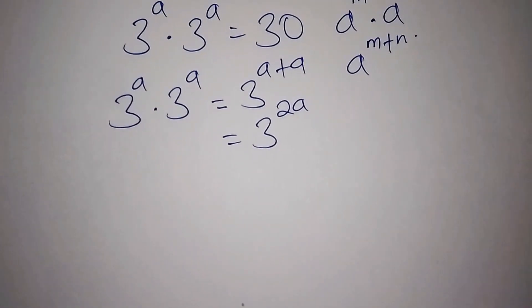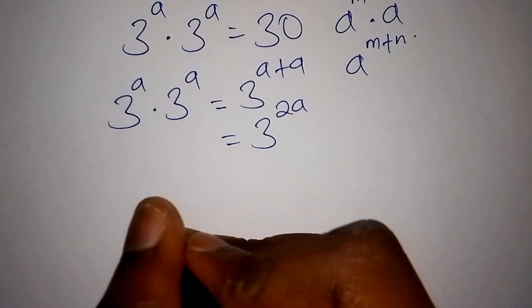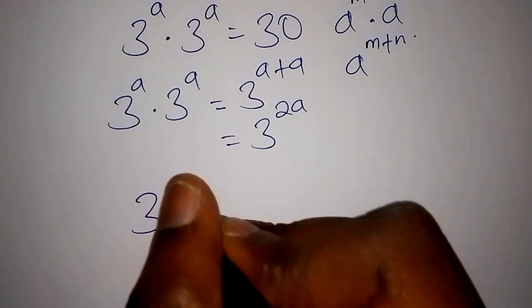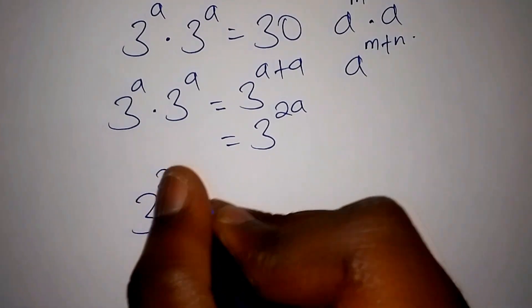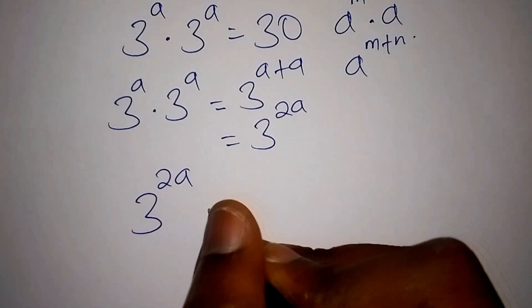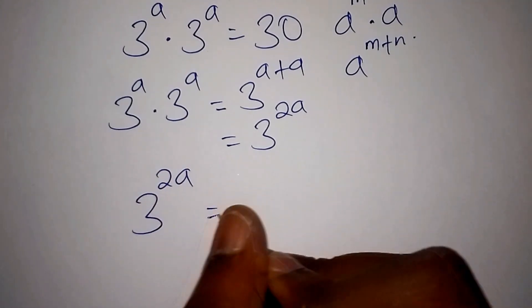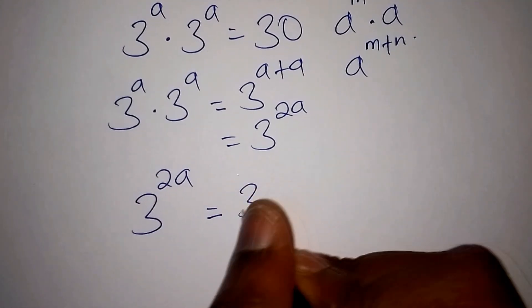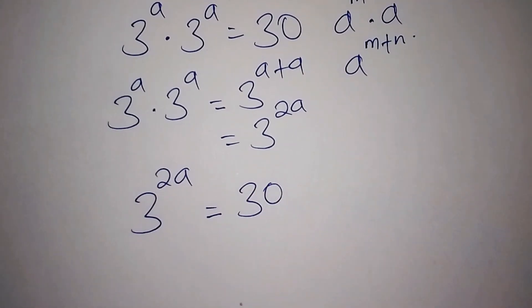So 3 to the power of 2A is now equals to 30.